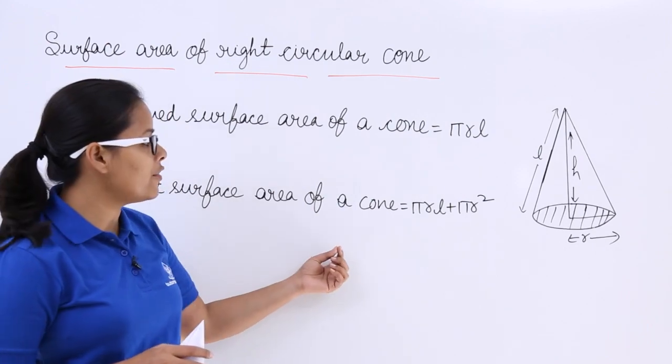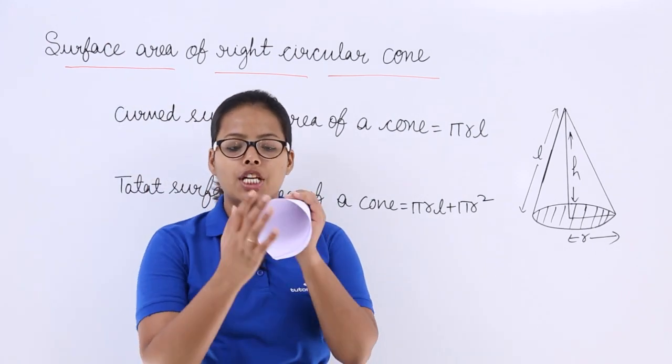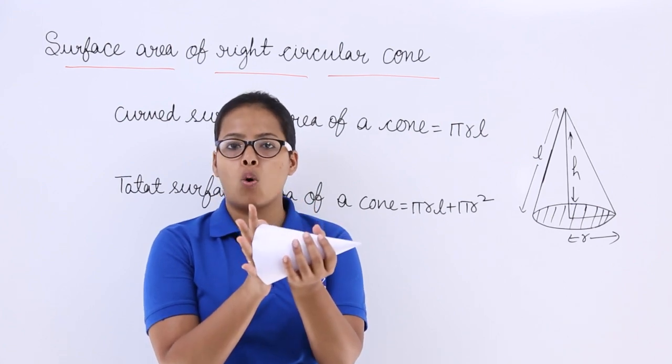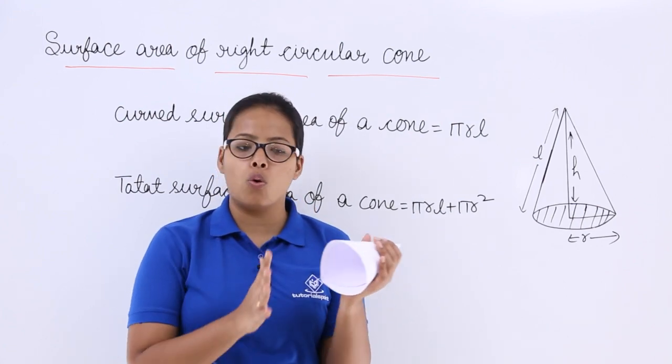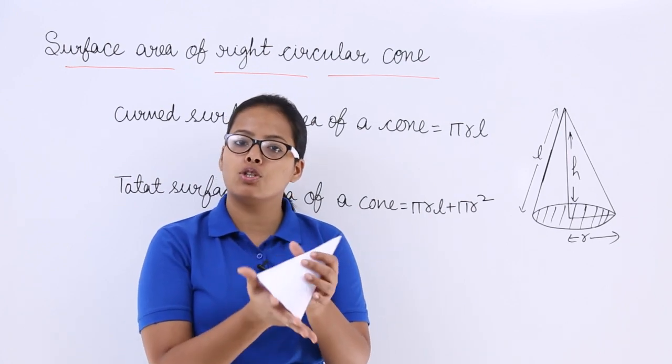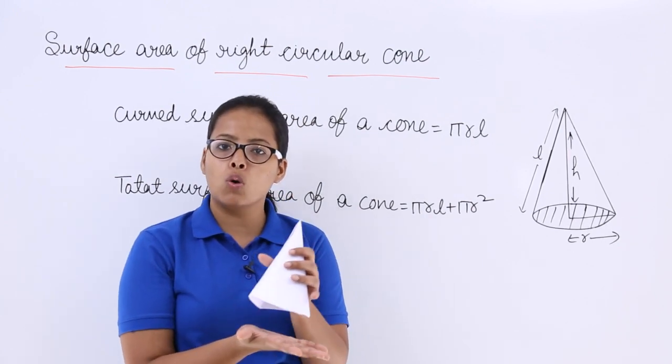So when you need to calculate total surface area of cone, which means you need to add a cap here, you need to close this cone and you can close this cone by cutting a circle on a paper and then paste it here. So this will become a cone, closed cone.